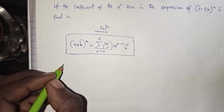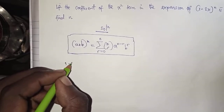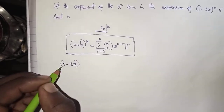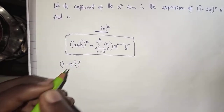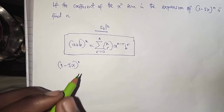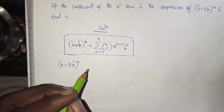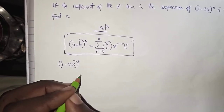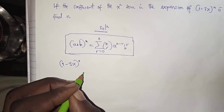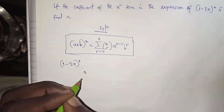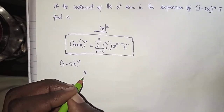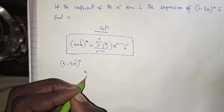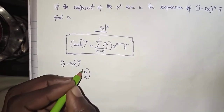Now the problem we have is (1 minus 3x) to the power n. Since we are looking for the particular value of n, we are going to use a particular term, which involves n choose 2.